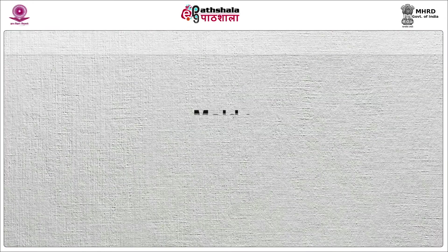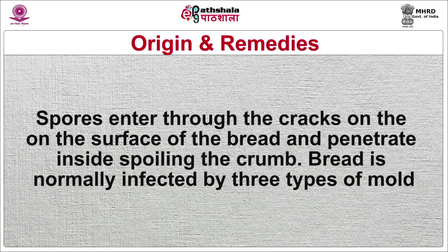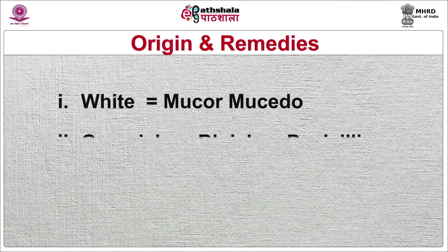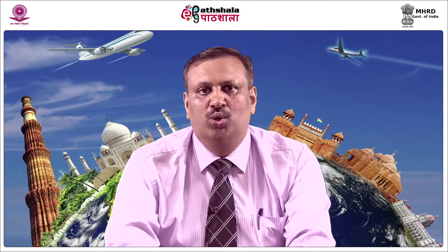The bakery should be spotlessly clean with no accumulation of dust; all equipment and utensils should be kept clean and the area should be well ventilated. The second disease is mold. Spores of mold are always present in the atmosphere and they grow when they find suitable conditions of warmth and moisture. Spores enter through cracks on the surface of the bread and penetrate inside, spoiling the crumb. Bread is normally infected by three types of mold: white Mucor, greenish or bluish Penicillium or Aspergillus, and black Aspergillus niger. To keep mold growth in check the baker should maintain proper hygienic conditions at all times.